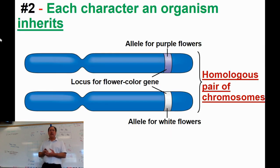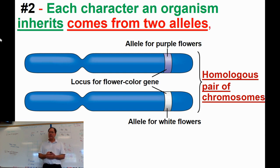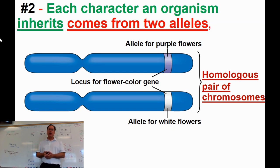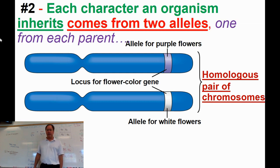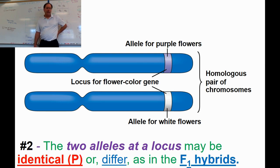Here's the second hypothesis: each character an organism inherits — say flower color or eye color — comes from two alleles. We know this to be true now. He was thinking one came from mom, one from dad, they came together and helped create the characteristic. The two alleles at the locus may be identical or they may be different — as in the F1 hybrids.